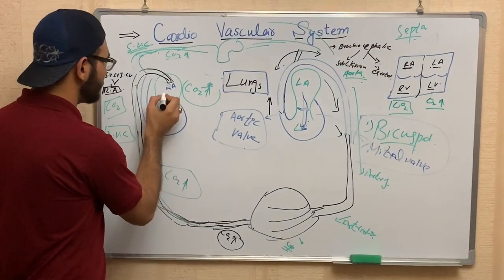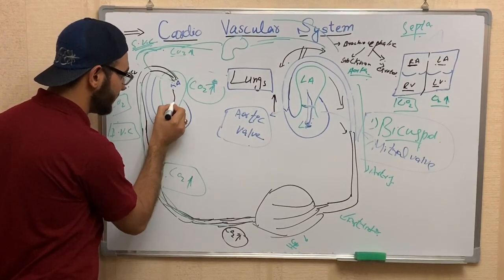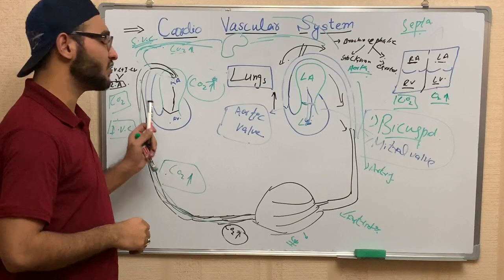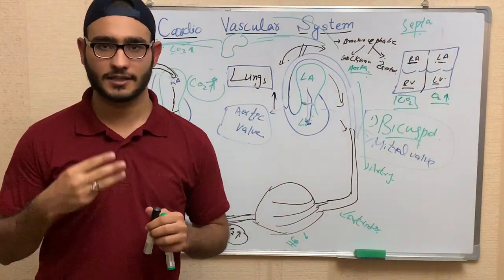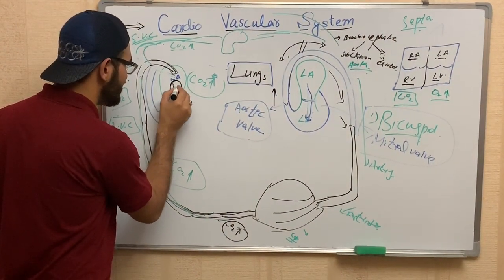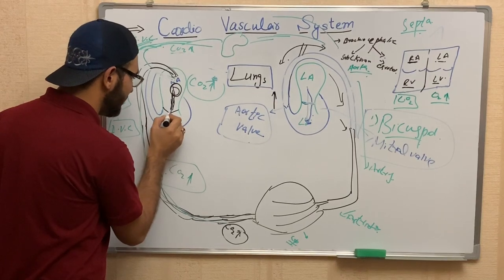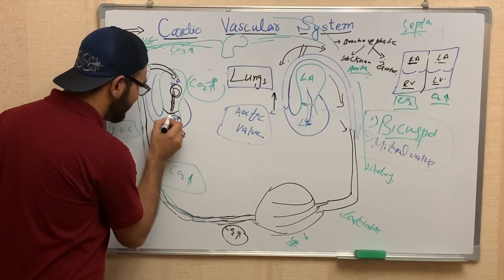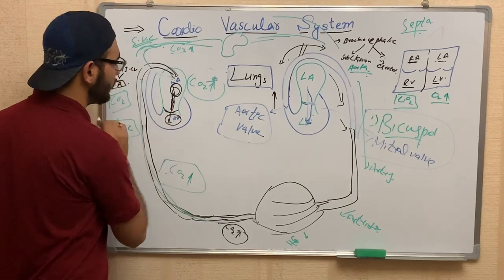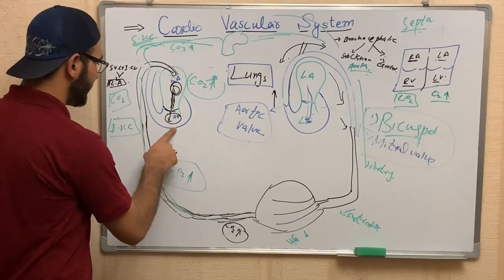When blood enters the right atrium, it moves from the right atrium into the right ventricle, but there is a valve called the tricuspid valve. It is named the tricuspid valve because it contains three cusps. When the blood enters the right ventricle, any backflow is prevented because the tricuspid valve closes.